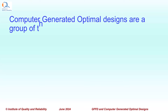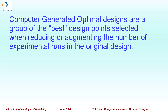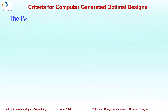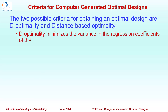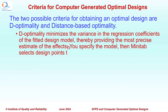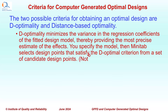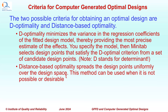Computer-generated optimal designs are a group of the best design points selected when reducing or augmenting the number of experimental runs in the original design. The two possible criteria for obtaining an optimal design are D-optimality and distance-based optimality. As per Minitab, D-optimality minimizes the variance in the regression coefficients of the fitted design model, thereby providing the most precise estimate of the effects. You specify the model, then Minitab selects design points that satisfy the D-optimal criterion. Note: D stands for determinant. Distance-based optimality spreads the design points uniformly over the design space and can be used when it is not possible or desirable to select a model in advance.